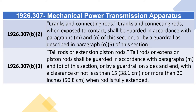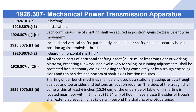1926.307(b)(2) Cranks and Connecting Rods: When exposed to contact, cranks and connecting rods shall be guarded in accordance with paragraphs (m) and (n) of this section. 1926.307(b)(3) Tail Rods or Extension Piston Rods: Tail rods or extension piston rods shall be guarded in accordance with paragraphs (m) and (o) of this section, or by a guardrail on sides and end with a clearance of not less than 15 inches (38.1 cm) nor more than 20 inches (50.8 cm) when the rod is fully extended.